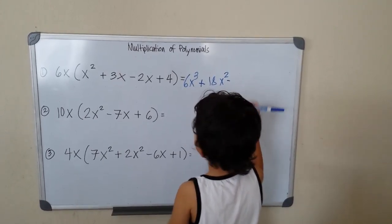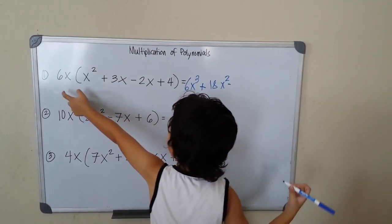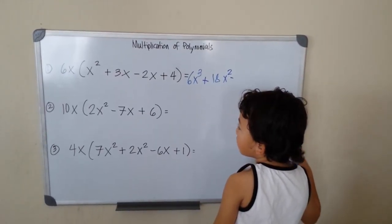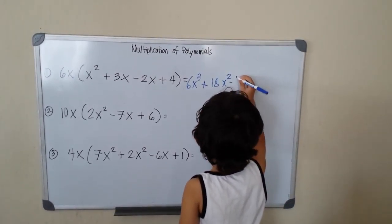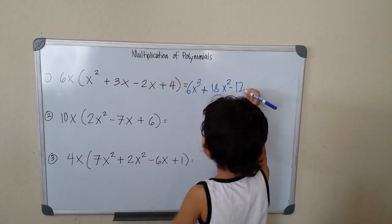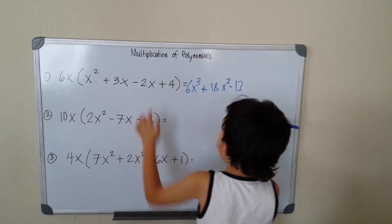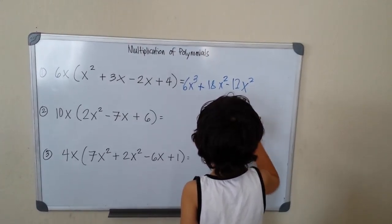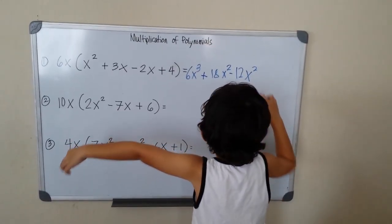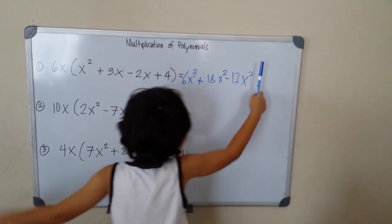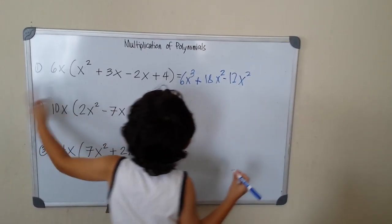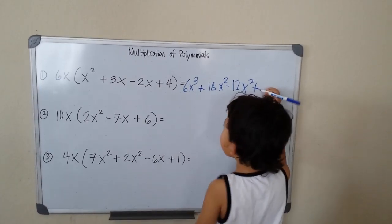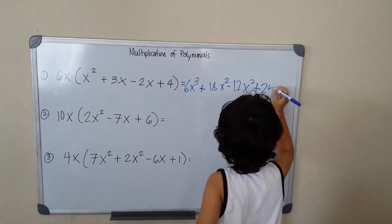Minus 6 times 2 is 12. So x times x is x squared. x squared. So x squared minus 6 times 4 is 24x.